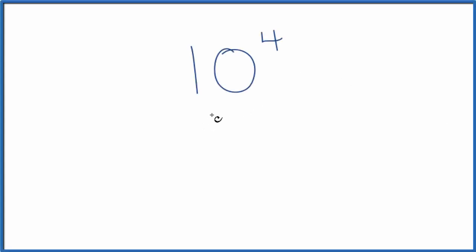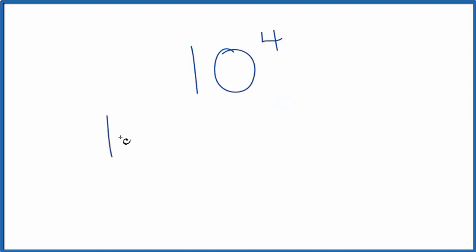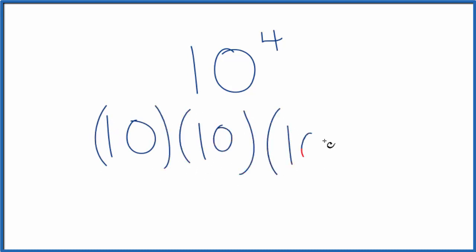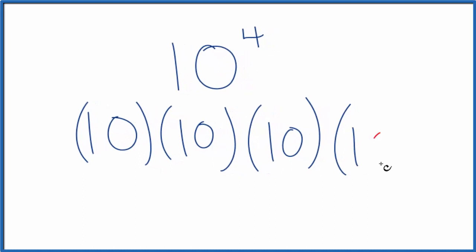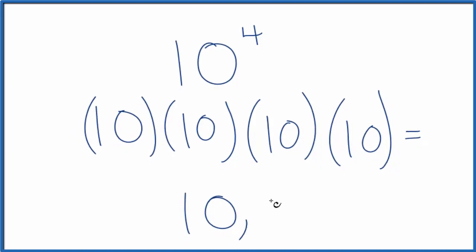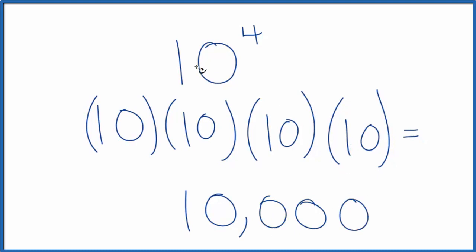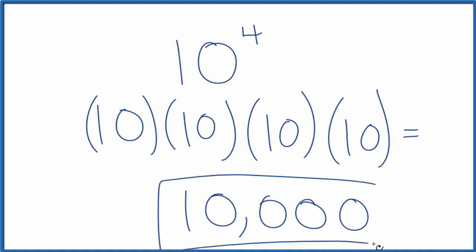Let's take a look at 10 to the 4th power. What is 10 to the 4th power? You can think about it this way: 10 to the 4th power would be 10 times 10 times 10 times 10. So 10 to the 4th power — 10 times 10 is 100, 100 times 10 is 1,000, then 1,000 times 10 is 10,000. So 10 to the 4th is just 10,000.